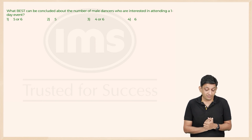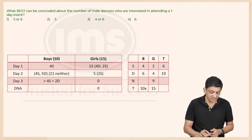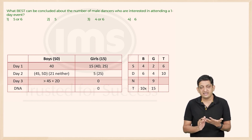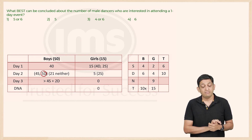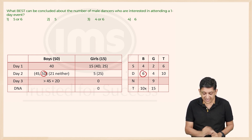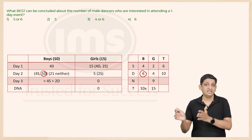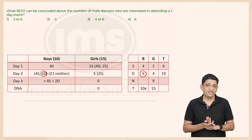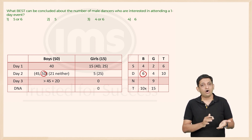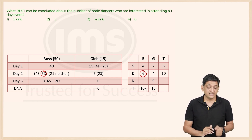Question 4: What best can be concluded about the number of male dancers interested in attending a one-day event? The 5 dancers interested in the two-day event will also be interested in the one-day event. However, we do not know whether the 6th male dancer is interested in attending. So the answer is either 5 or 6, which is option 1.